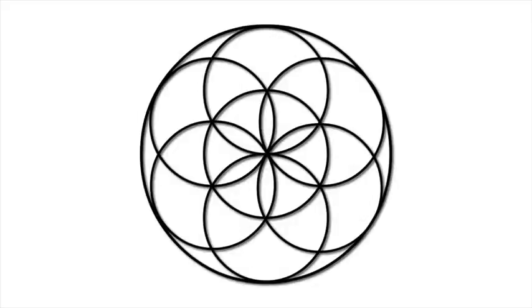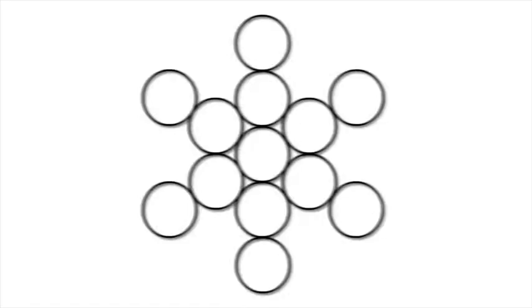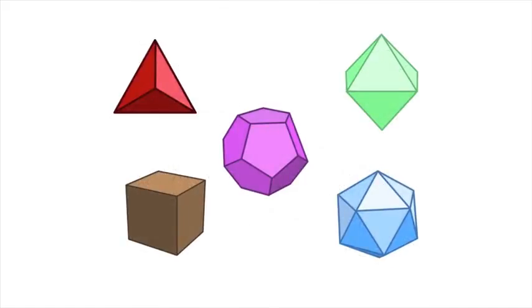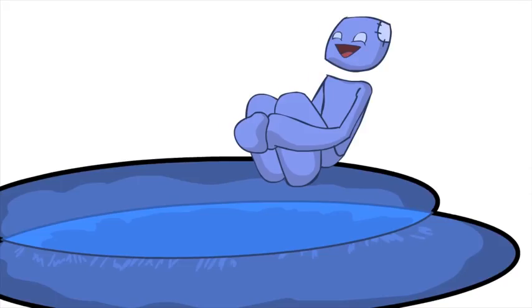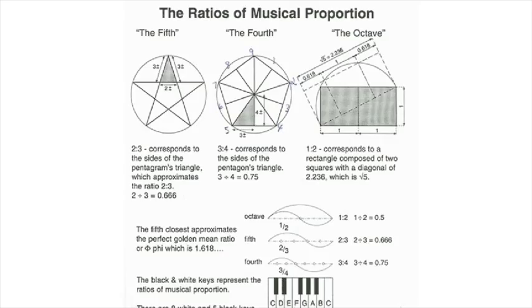We looked at the Genesis pattern and how it forms the fruit of life, the pattern that all physical matter in existence comes out of. We jumped out of the sacred geometric pool for a few lessons, and today we're going to dive right back in. I've mentioned quite a few times that within the flower of life are found the music and harmonics of everything in existence. Let's find out how that works, shall we?